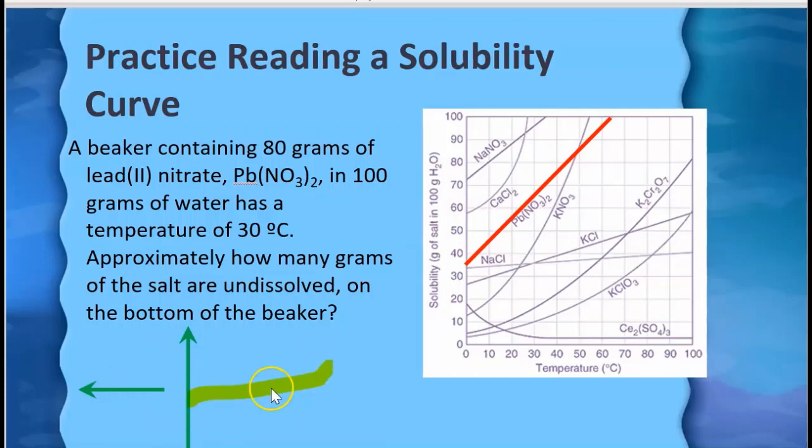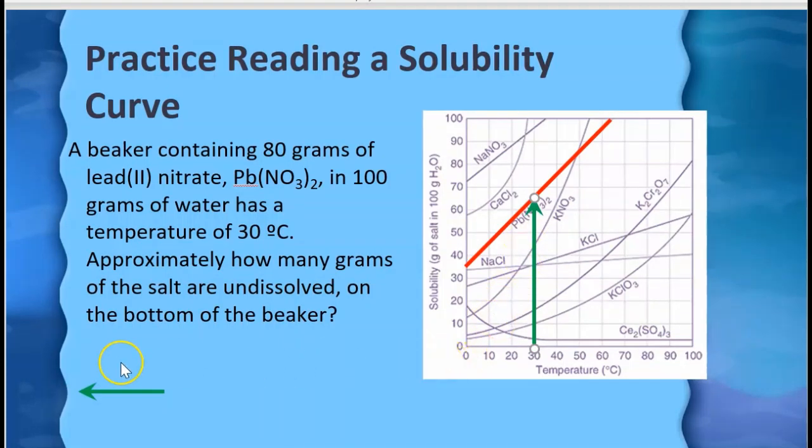So in order to do this problem, I'm going to look at the axis for 30 degrees. And I know that a full solution at 30 degrees should be right on the line, that's a saturated solution. And I know I must have a saturated solution because there is salt sitting at the bottom of the beaker. So not all of it is dissolved, it's full.